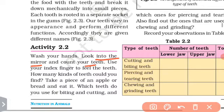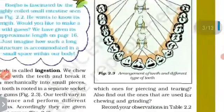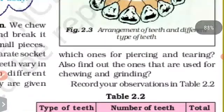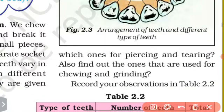Take a piece of apple and bread and eat it. Which teeth do you use for biting and cutting? Which ones for piercing and tearing? Find out the ones that are used for chewing and grinding.